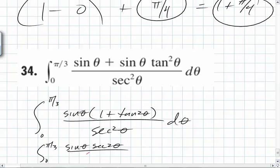Secant squared theta. And what happens? It's gone. So what do you end up with? 0 to pi over 3 of sine theta d theta. Can you do that?